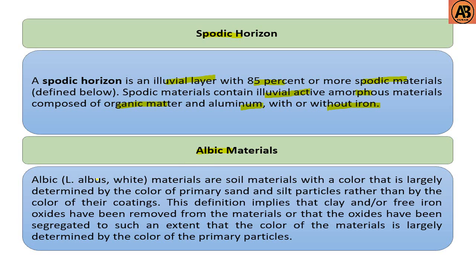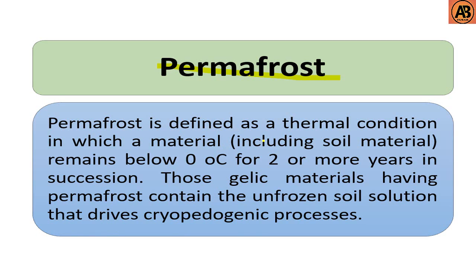The next one is albic materials. Albic — from albus, meaning white — materials are soil materials with a color largely determined by the color of primary sand and silt particles rather than by the color of their coatings. This implies that clay or free iron oxides have been removed, or that the oxides have been segregated to such an extent that the color is largely determined by the primary particles. The last one is permafrost. Permafrost is defined as a thermal condition in which a material, including soil material, remains below zero degrees Celsius for two or more years in succession. Gelic materials having permafrost contain unfrozen soil solution that drives cryopedogenic processes.